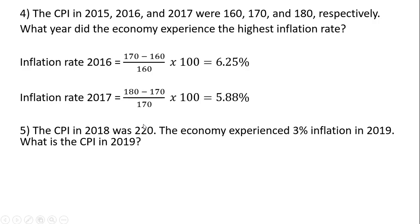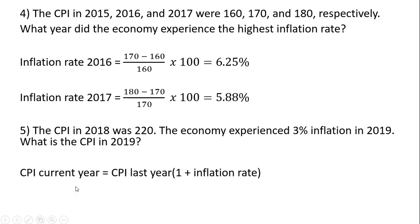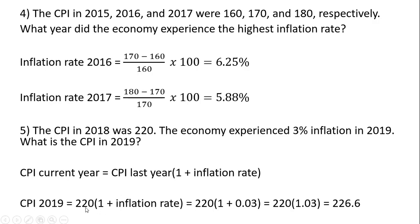Question five. The CPI in 2018 was 220. The economy experienced 3% inflation in 2019. What is the CPI in 2019? The CPI in the current year equals the CPI last year, multiplied by 1 plus the inflation rate. So the CPI last year was 220, and the inflation rate was 3%, so 220 multiplied by 1.03 means the CPI in 2019 must be 226.6.